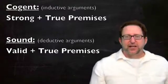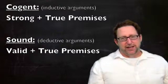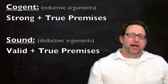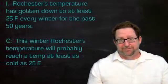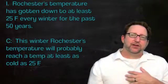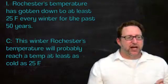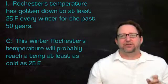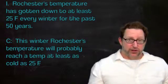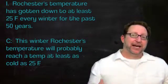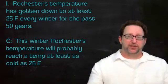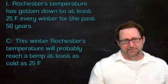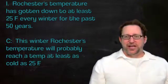So let's look at the two inductive arguments that we've discussed up to this point in this talk. The first one was about Rochester's weather. So Rochester, according to this argument, has had temperatures as low as 25 degrees Fahrenheit every year for the past 50 years. Therefore, it is likely that this upcoming winter will have temperatures at least as low as 25 degrees Fahrenheit.